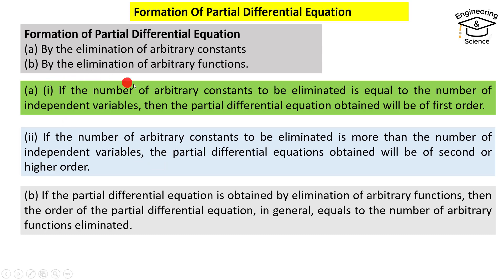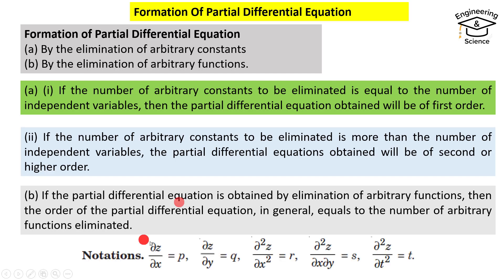For elimination of arbitrary functions, the order is equal to the number of arbitrary functions eliminated. We have these notations: partial z with respect to x equals p, partial z with respect to y equals q, and so on.